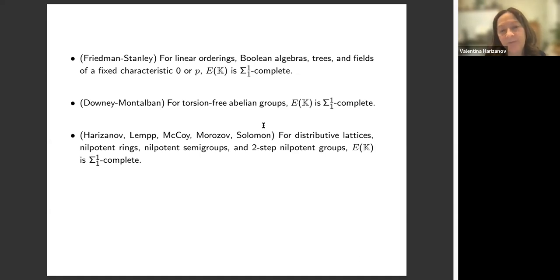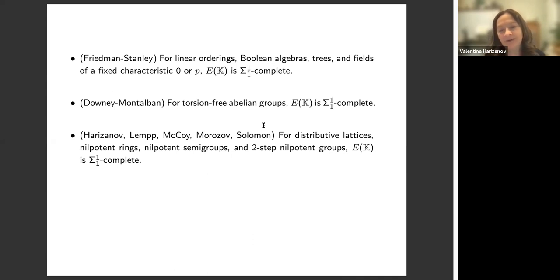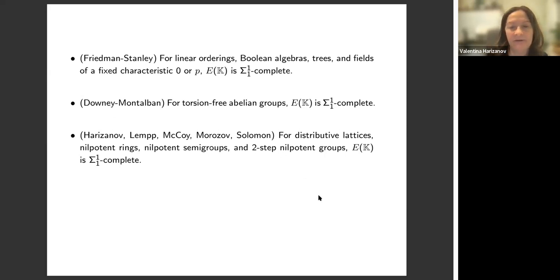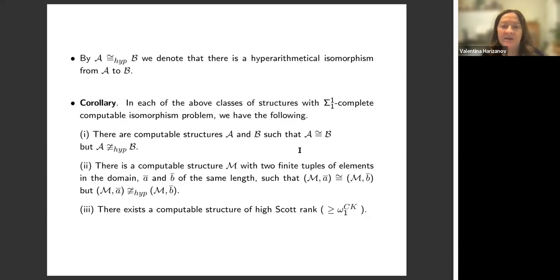In a recently published paper with Stephen Lamb, Charlie McQuindra, Marozan, and Reed Solomon, we showed that for distributive lattices, nilpotent rings, and nilpotent semigroups, the isomorphism problem is Σ¹₁-complete. There is also a direct proof using trees in Goncharov and Knight, but our proof is different and simpler, so we included it for that sake.